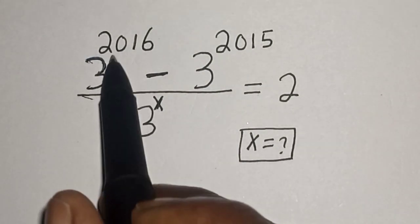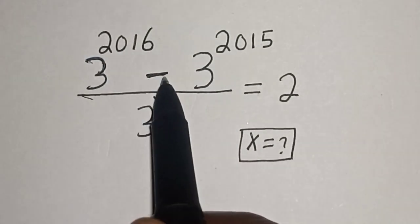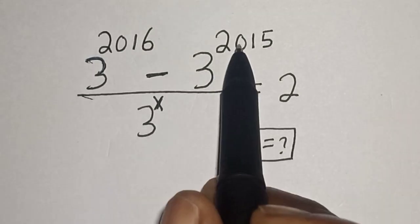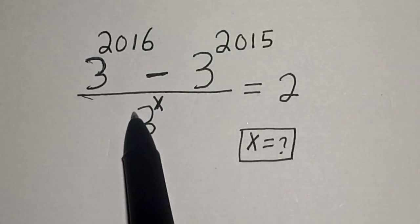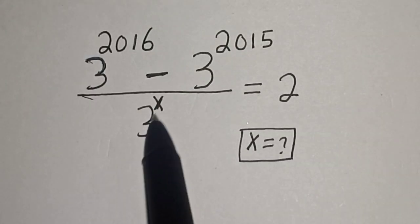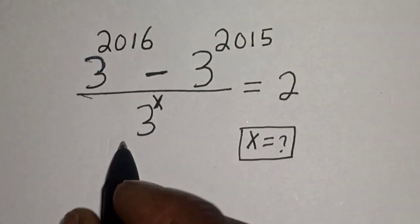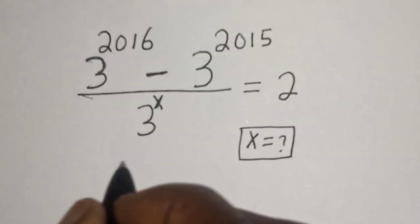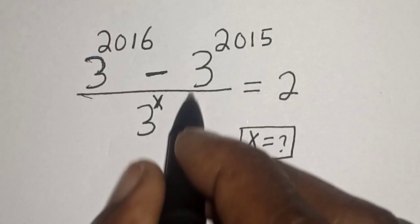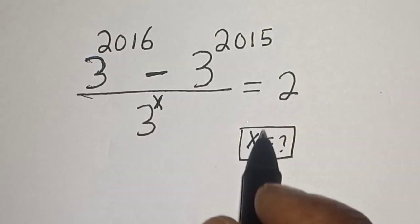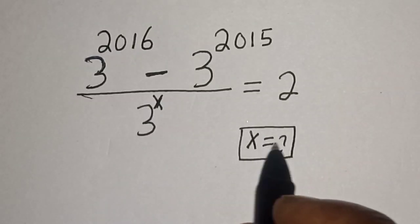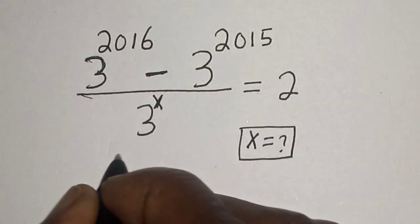3 raised to power 2016 minus 3 raised to power 2015, divided by 3 raised to power s, is equal to 2. Before we proceed, please don't forget to like, share, comment, and subscribe. Thank you. Solution.